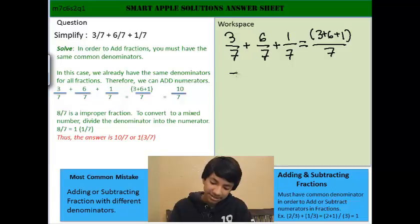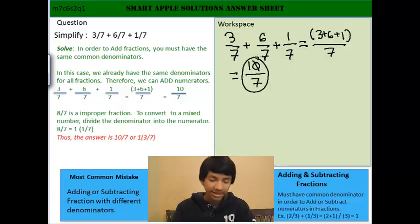So, 3 plus 6 plus 1 over 7 equals 10 over 7. And that is your answer.